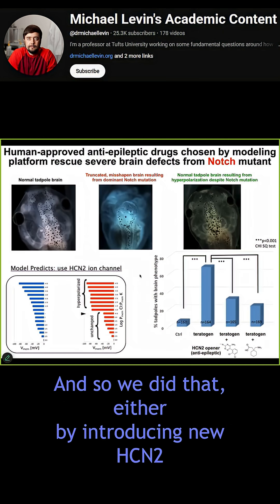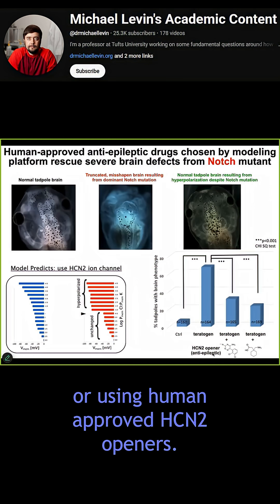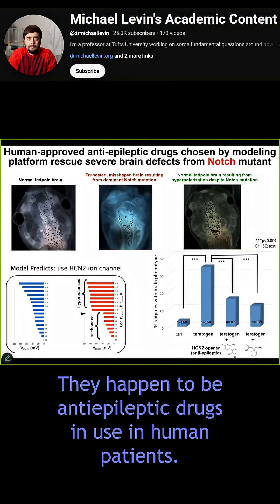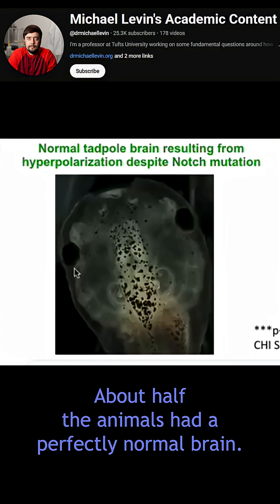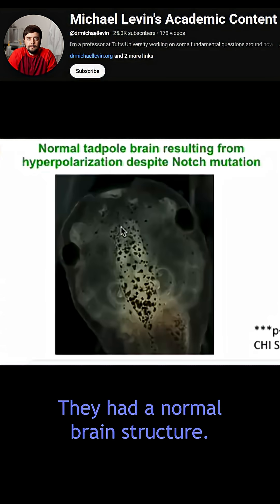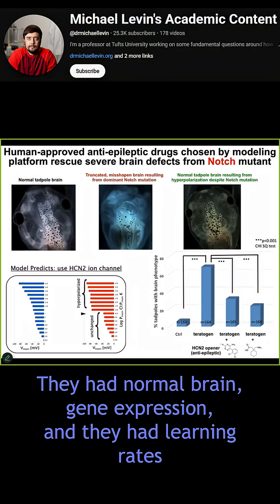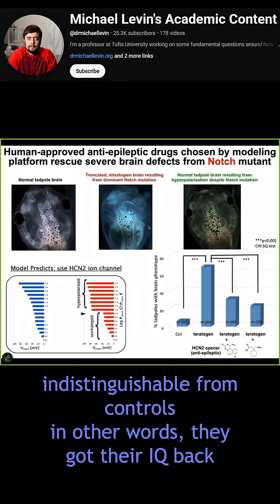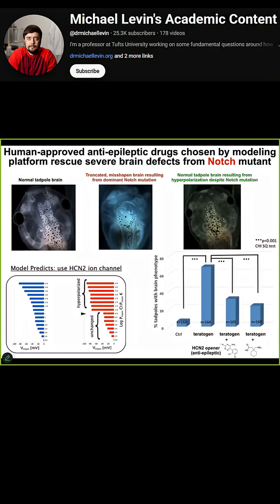And so we did that either by introducing new HCN2 or using human-approved HCN2 openers. They happen to be anti-epileptic drugs in use in human patients. About half the animals had a perfectly normal brain. They had normal brain structure, normal brain gene expression, and learning rates indistinguishable from controls. In other words, they got their IQs back, even though they're bearing this really nasty notch mutation.